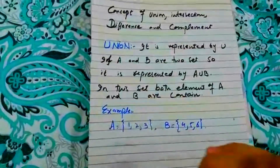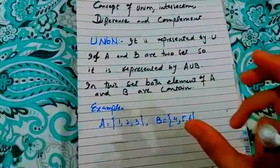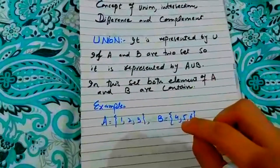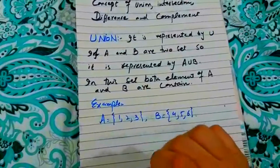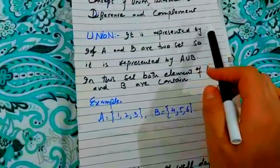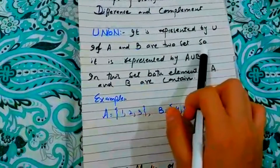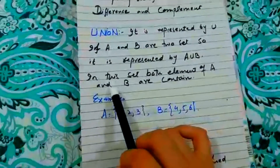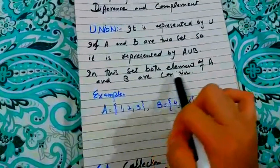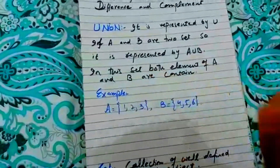First of all, we have to look at what is union. Union is basically a set where there are two sets or three sets, and we write all the elements in one set. If A and B are two sets, it is represented by A union B. In this set, both elements of A and B are contained.